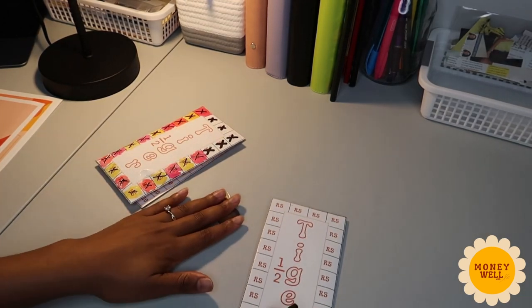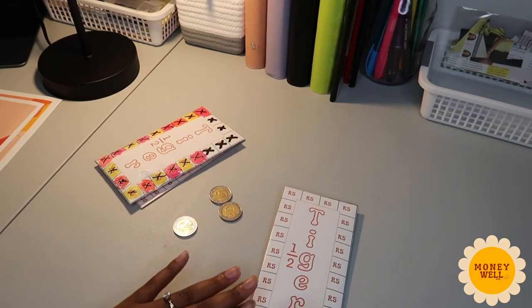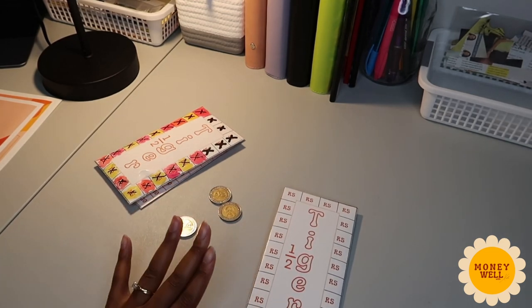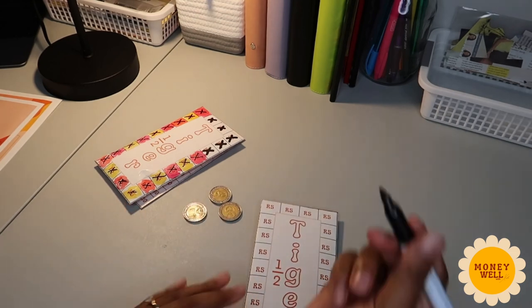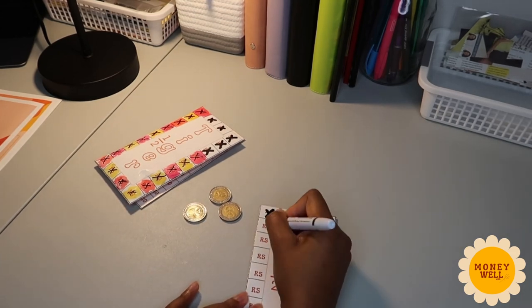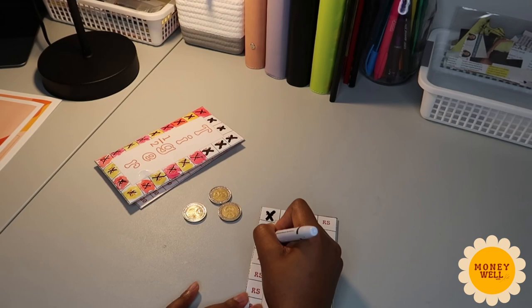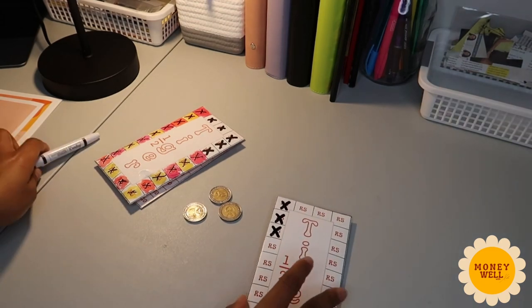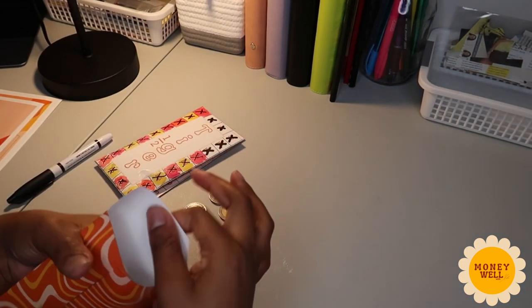So I'm just going to quickly show you, I've got some five rand coins here, right? So the first thing that you do is color in or cross out each box every time you place money in. So I've got 15 rand here, I'm going to cross out 15 rand and then just place this in here.